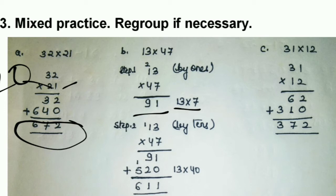Then multiply by 40: 13 times 4 gives 520. Adding 91 and 520 gives 611. One more question is solved — that one also does not require regrouping.